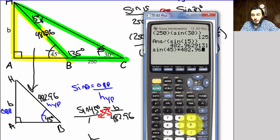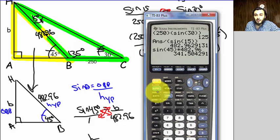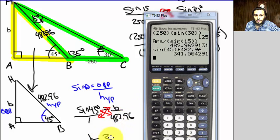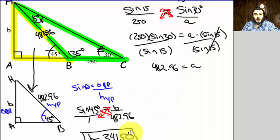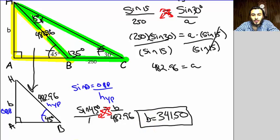So the sine of 45 times 482.96 is equal to approximately 341.50, if we round to the nearest hundredth. So that's what I get for B. I get approximately 341.50. Let me move that up. So B equals 341.50. Okay, and that's the final answer.